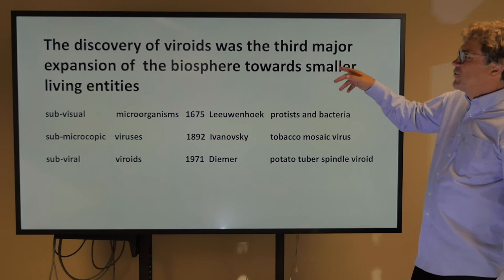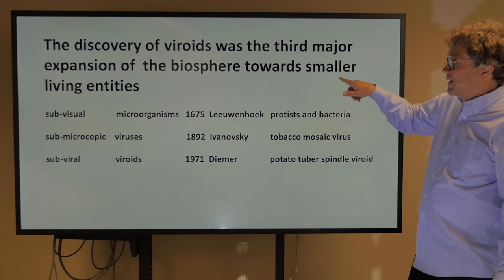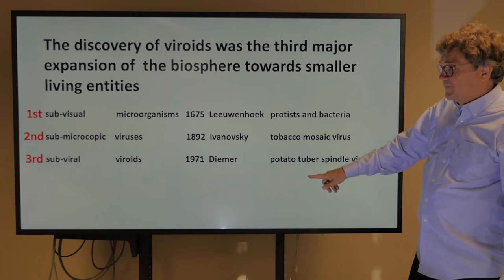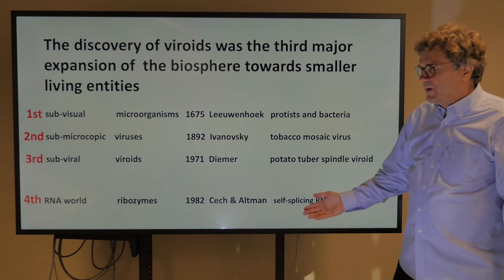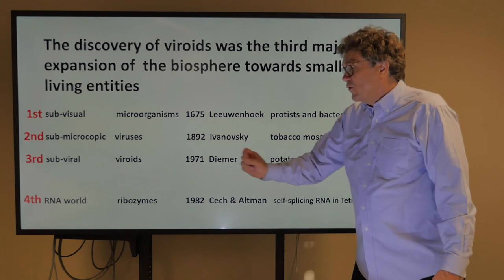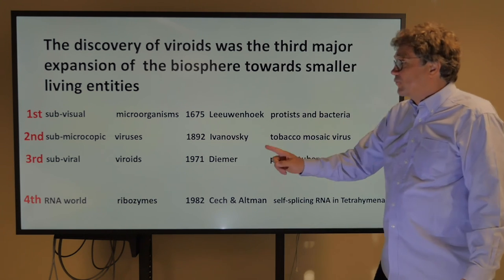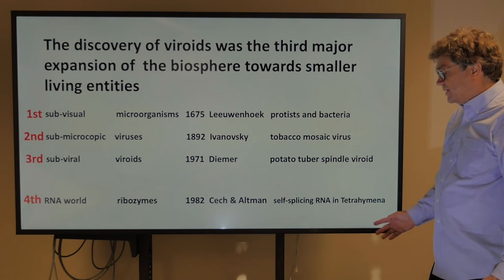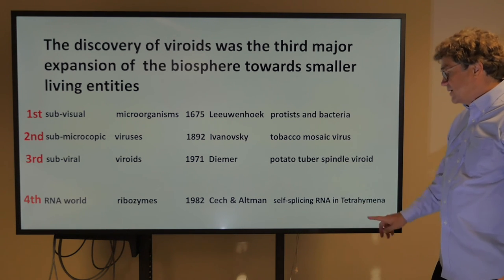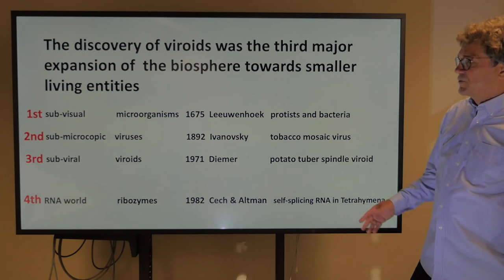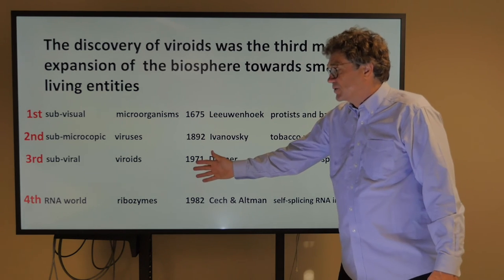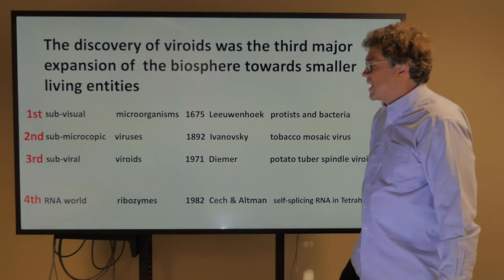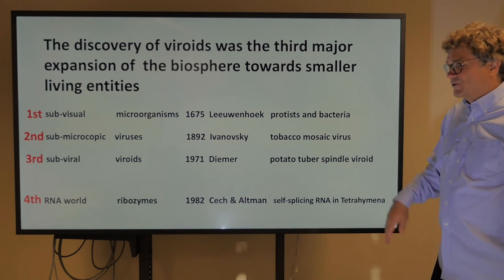The discovery of viroids was the third major expansion of the biosphere towards smaller living entities. But maybe we can talk about a fourth expansion — ribozymes. They were discovered in 1982; examples include self-splicing RNA in Tetrahymena. So there are very different types of organisms: microorganisms, viruses, viroids, and now ribozymes.